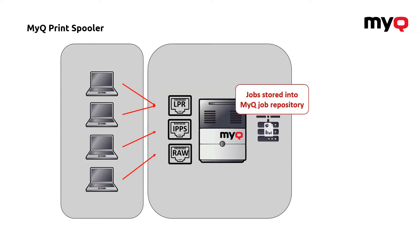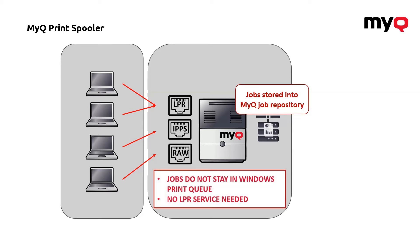The important part is that the job does not stay in the Windows print queue. So in a case something happens with your server — for example, it is switched from one node of a cluster to another node of cluster — you have a failover solution. You are not losing your job because the job is in the job repository. At the same time, if you're using the default LPR printing, you don't need any LPR service installed because MyQ will replace that. It just listens directly on that port and receives all the jobs coming to the system.